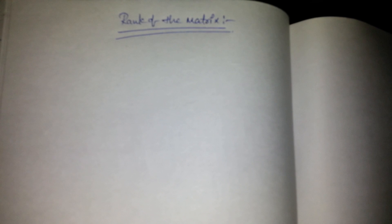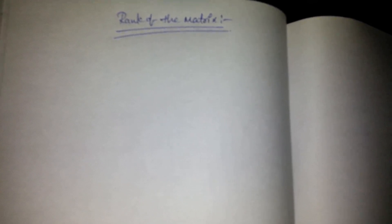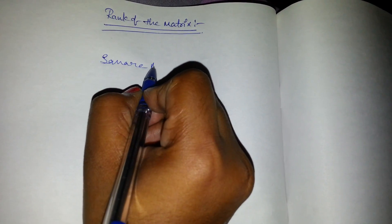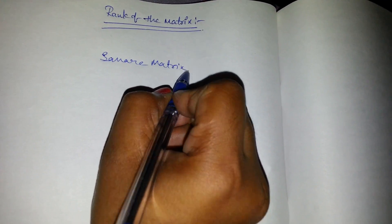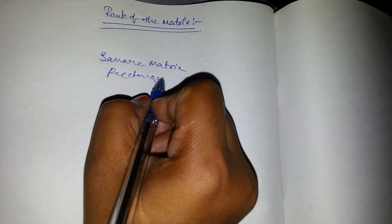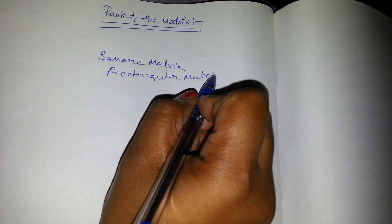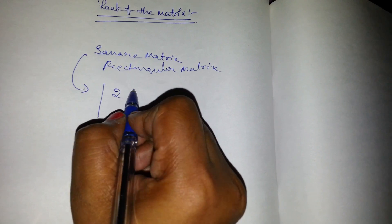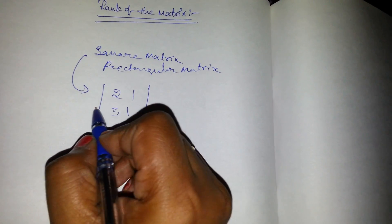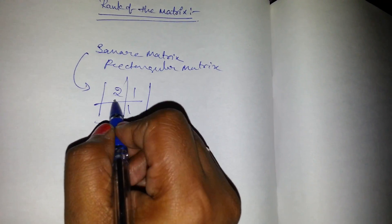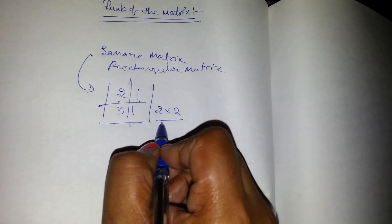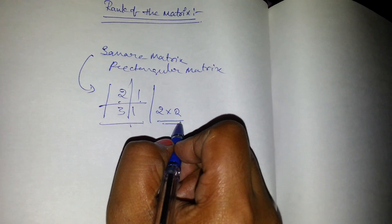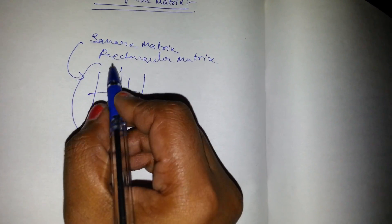Now I am going to explain how to find the rank of a matrix. Before that, we should know the meaning of the square matrix and the rectangular matrix. A square matrix is nothing but the number of rows is equal to the number of columns. Here the number of rows is 2 and the number of columns is 2, so the number of rows is equal to the number of columns.